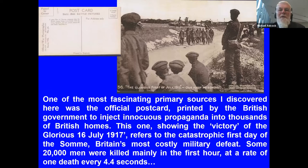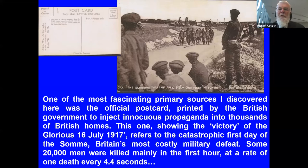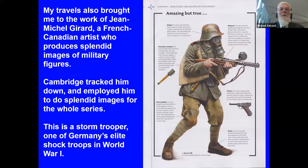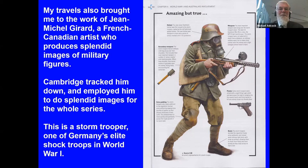The exhibition spaces were astounding, but what I needed was access to the broadest and deepest collection of recent publications containing fresh and stimulating insights into World War One. One of the most fascinating primary sources I discovered was also the most humble — the official postcard printed by the British government to inject innocuous propaganda into thousands of British homes. This one talks about the 'glorious 1st of July — our first prisoners,' referring to about a dozen German prisoners. It is an outrageous distortion because that date refers to the catastrophic first day of the Somme, Britain's most costly military defeat.